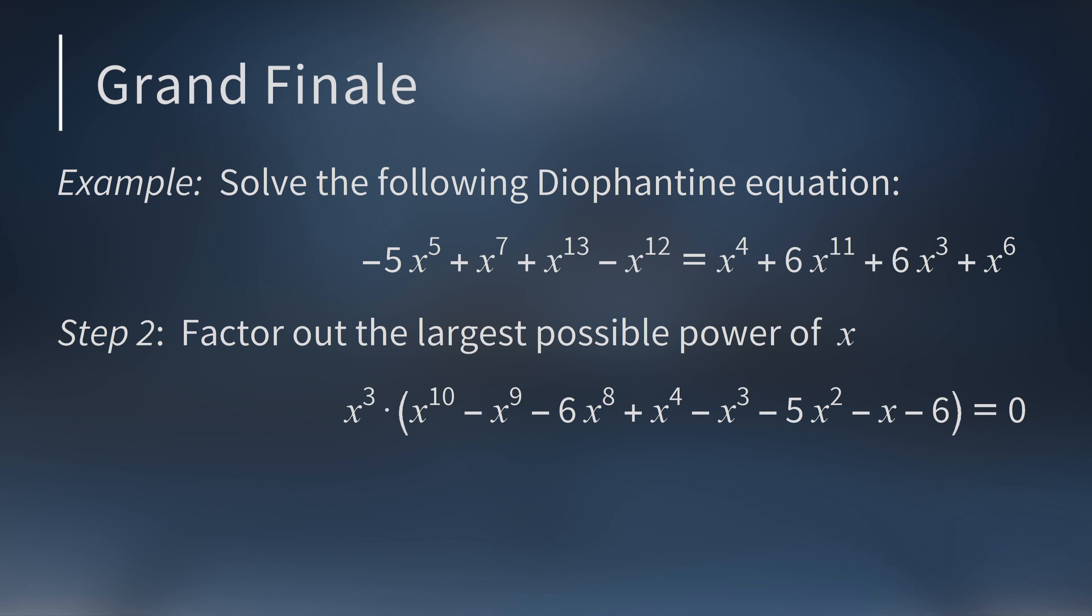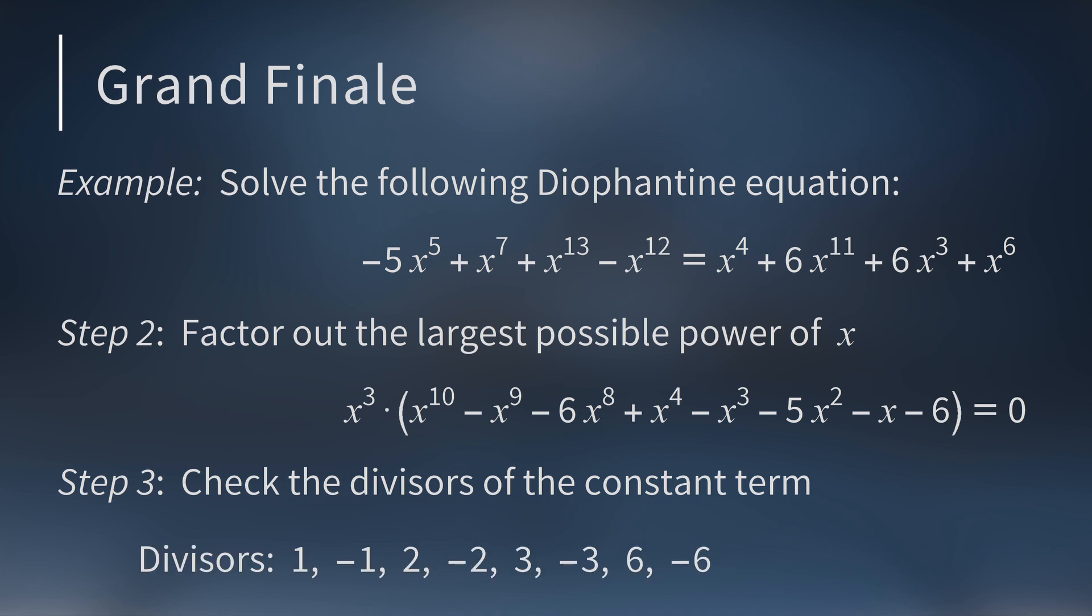And now we want to check the polynomial in parentheses to see if it's ever zero. To do this, we check all the divisors of the constant term negative six. There are eight divisors: one, negative one, two, negative two,